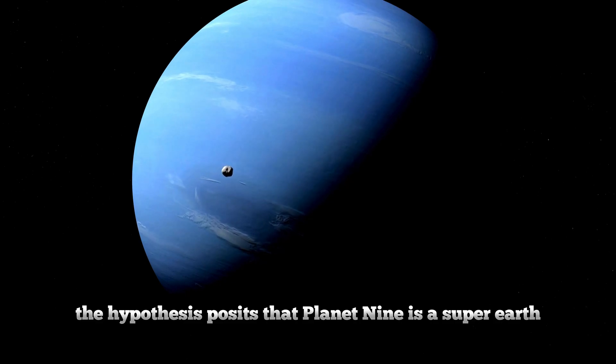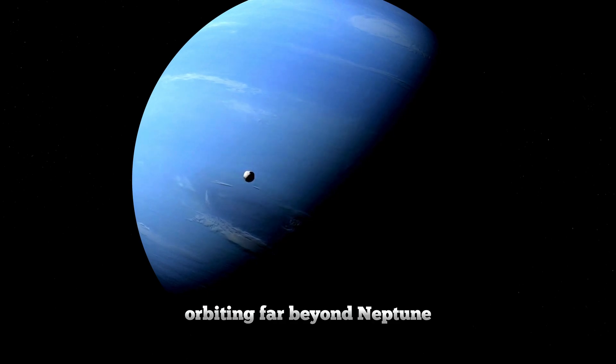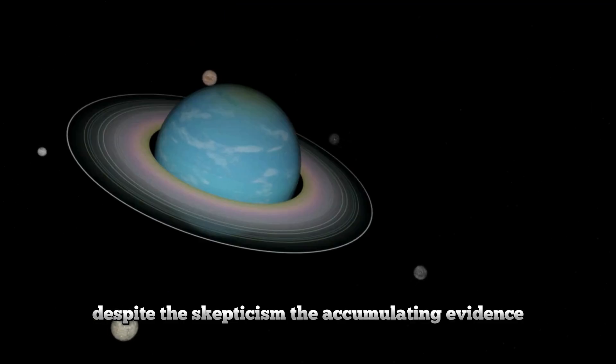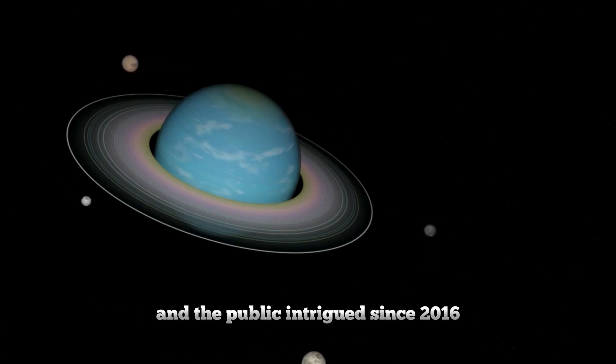The hypothesis posits that Planet Nine is a super-Earth, possibly up to 10 times the mass of our planet, orbiting far beyond Neptune. Its gravitational influence could explain the clustered orbits of distant TNOs. Despite the skepticism, the accumulating evidence strengthens the case for this hidden planet, keeping the scientific community and the public intrigued.